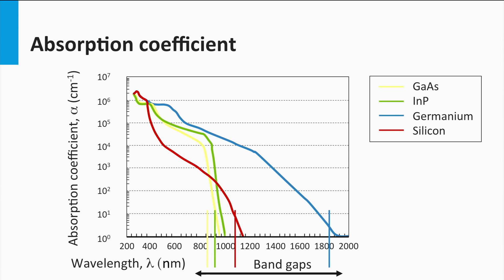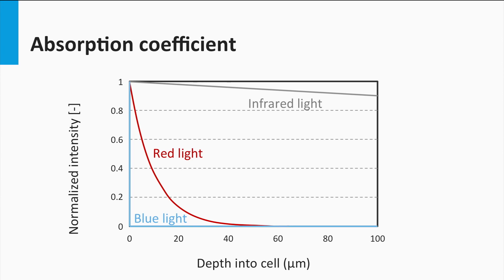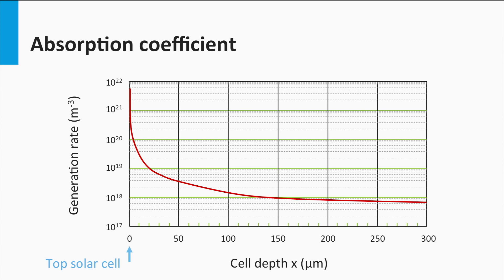In general, all semiconductor materials show that the absorption coefficient in the blue is orders of magnitude larger than in the red. This means that the penetration depth of blue light into the absorber layer is rather small. Let's take as an example the normalized light intensity with position in the silicon bulk. As you can see in this graph, the blue light is already fully absorbed within a few nanometers. The red light requires an absorption path length of 60 microns to be fully absorbed. The infrared light is hardly absorbed, and after an optical path length of 100 microns, only 10% of the light intensity is absorbed.